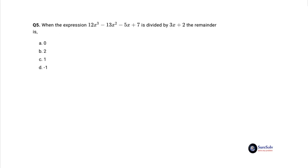Without further explanation, let's solve the last question. Question 5 is: when the expression 12x cubed minus 13x squared minus 5x plus 7 is divided by 3x plus 2, the remainder is option a: 0, option b: 2, option c: 1, and option d: minus 1.